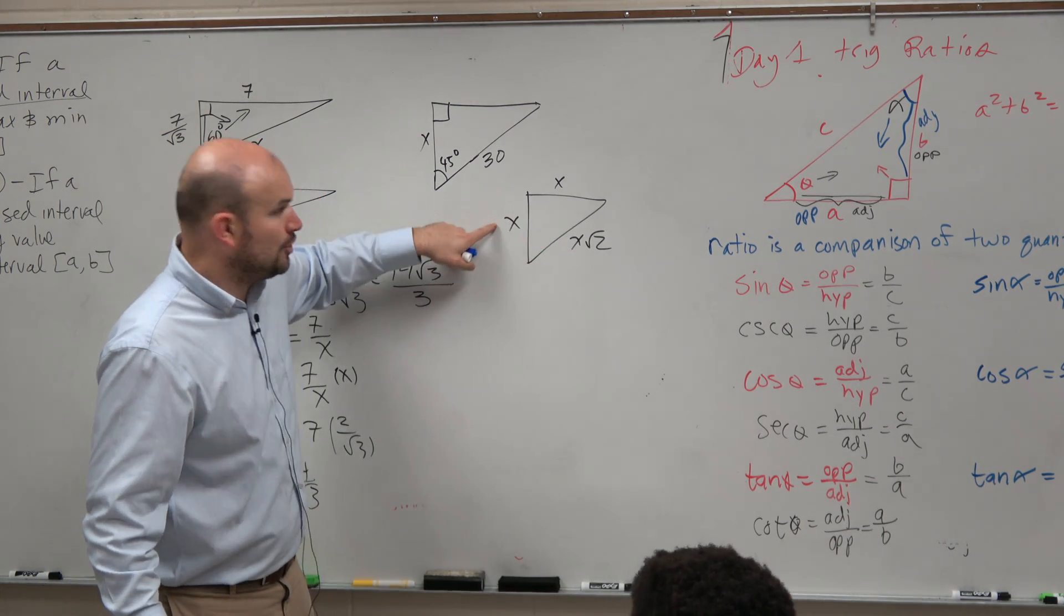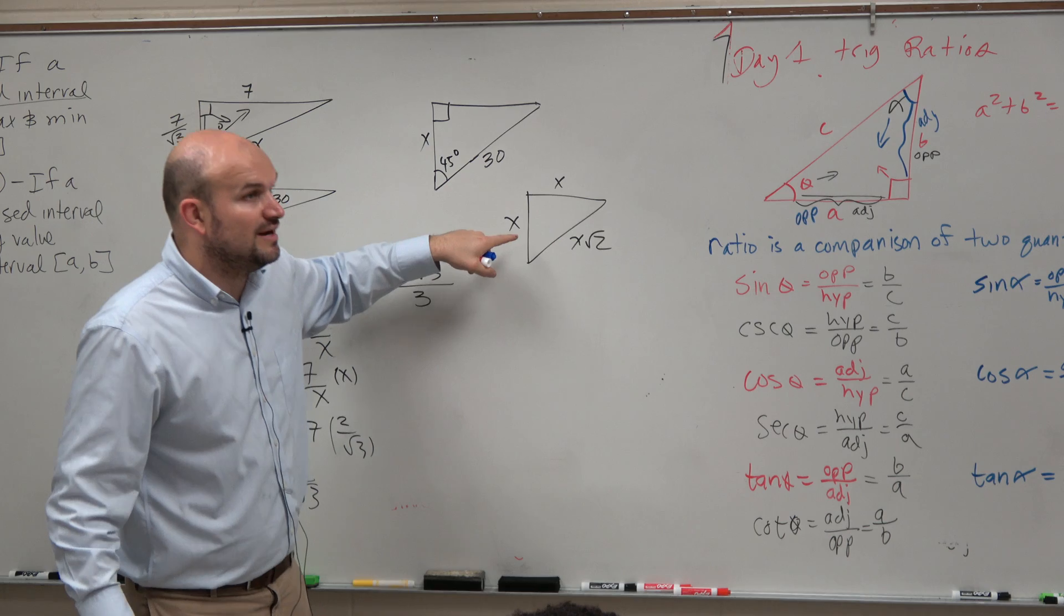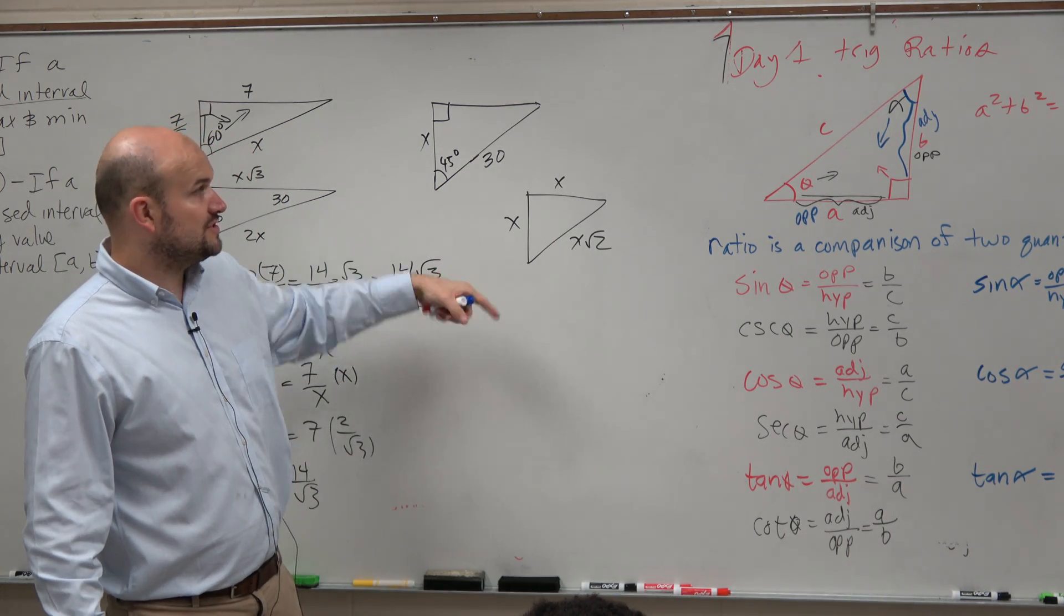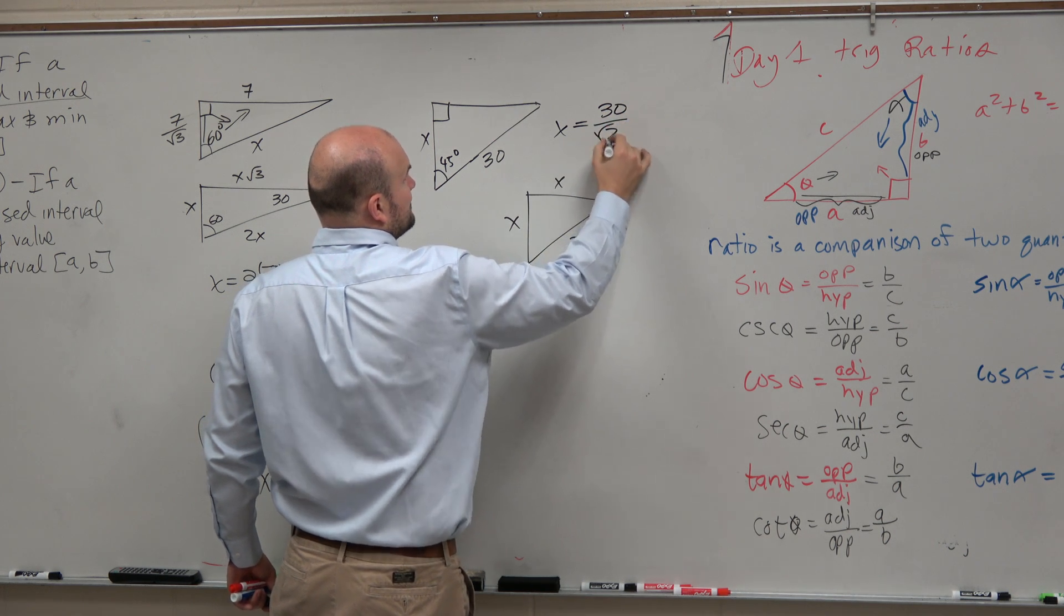So if I'm giving you this and I want to go back to here, to go from here to here you multiply by the square root of 2. So to go from here to here, you have to divide by the square root of 2. So therefore, this answer is simply x equals 30 divided by the square root of 2.